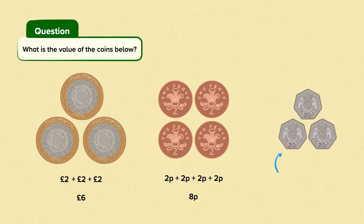This is a £2 coin. We have 3 lots of £2. So, £2 plus £2 plus £2 equals £6.